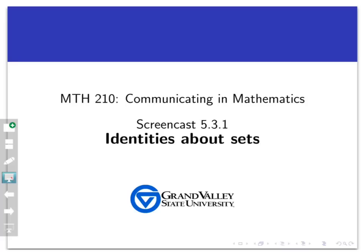Welcome to this screencast about identities about sets. What we're about to do is establish some ground rules and basic properties about sets and the way that we operate sets together, which will help us make future computations and proofs about sets a lot easier. When we talk about identities, one thing that might come to mind are trigonometric identities, like sine squared x plus cosine squared x equals 1. That's an identity from trigonometry that allows you to make certain things simpler, and there are a whole host of such identities aimed at making life simpler.